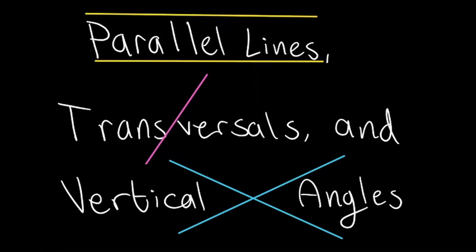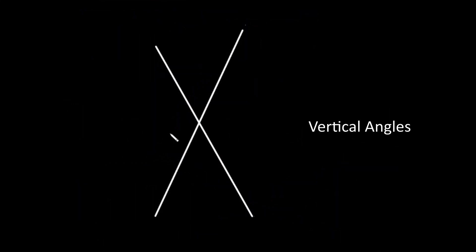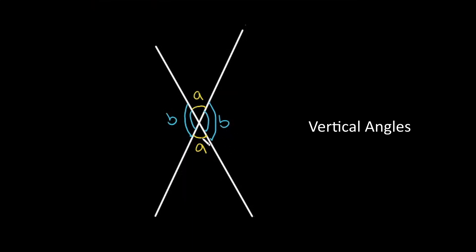Parallel lines, transversals, and vertical angles. Let's start with vertical angles. Let's say this angle is angle A. When you have two intersecting lines, vertical angles are the two angles that are across from each other. So this angle here would be vertical to angle A. Vertical angles are congruent, so these two angles are the exact same. And the same goes for these two — they will also be the same.